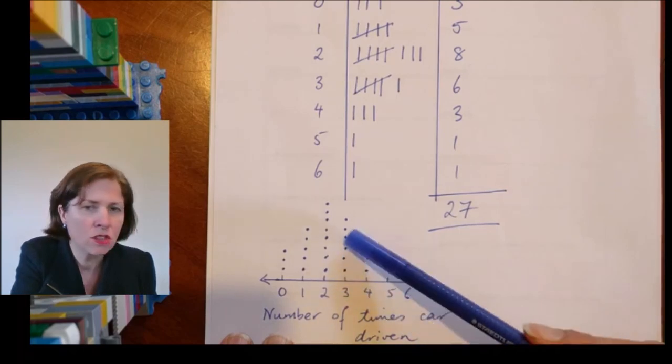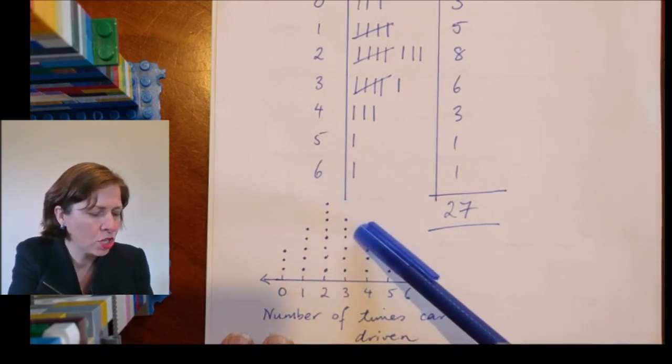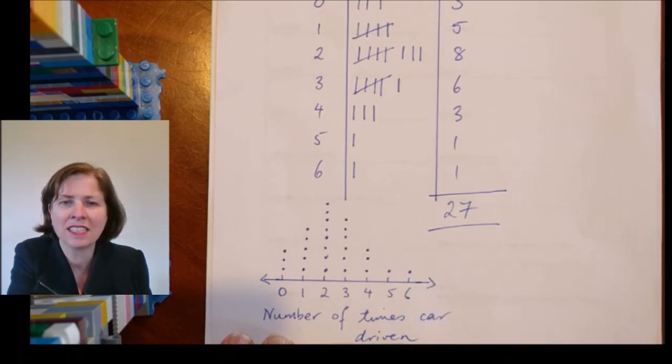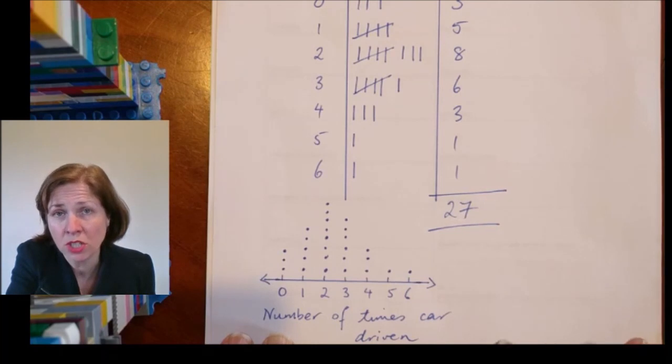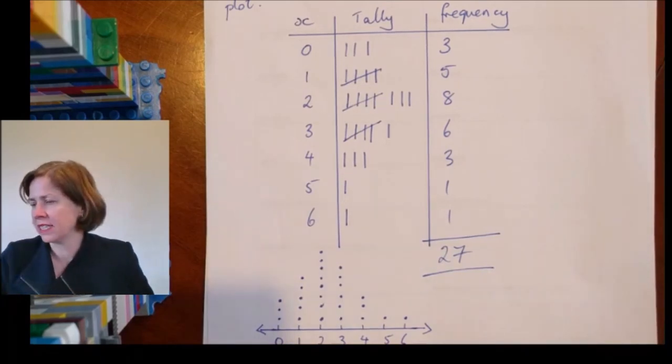And that there are more ones and threes on either side, right, and that I've got this kind of hill shape up and down. So I can start seeing the shape of the way the numbers are distributed. This is called the distribution—the shape of the way the numbers are distributed.